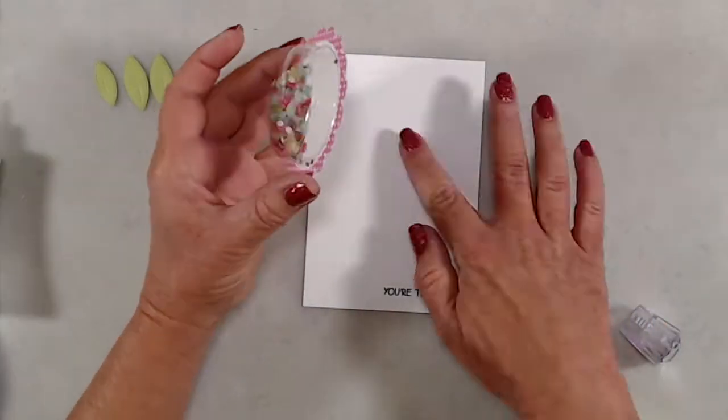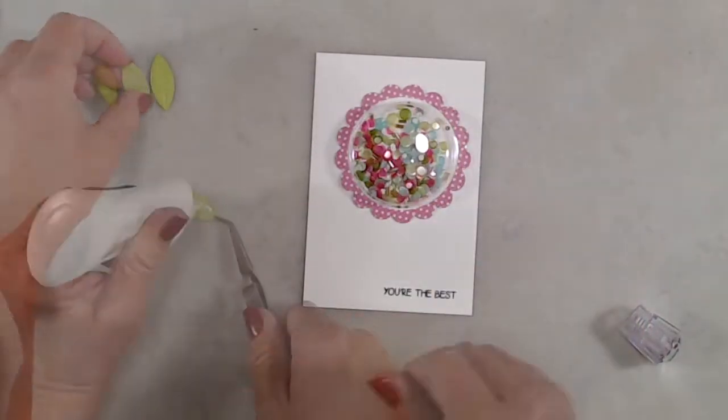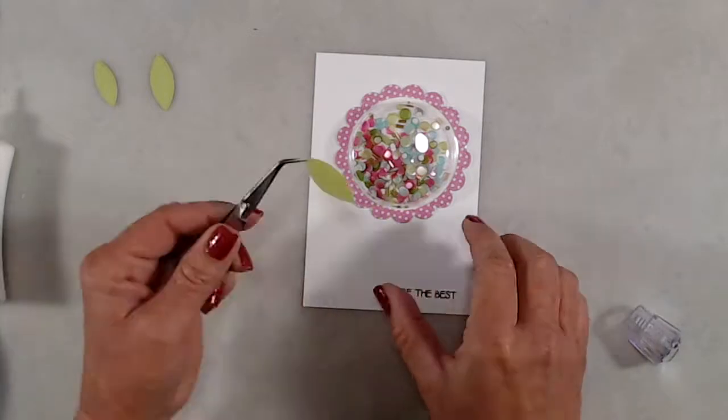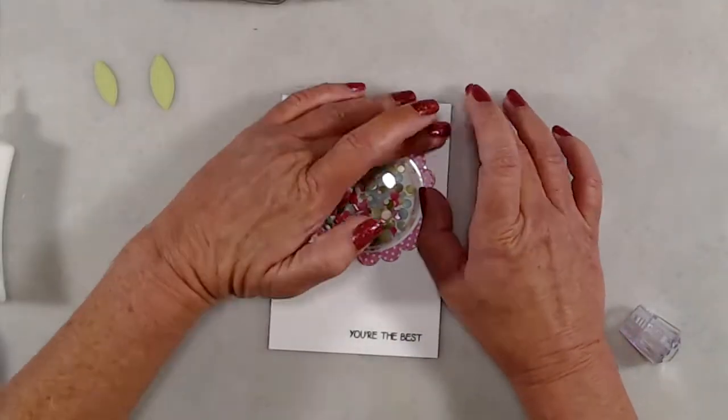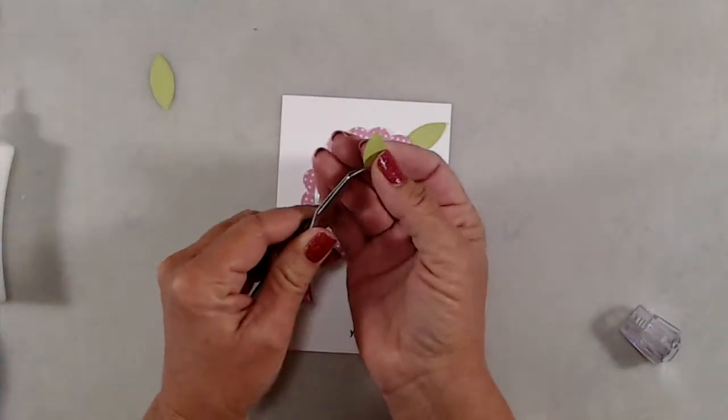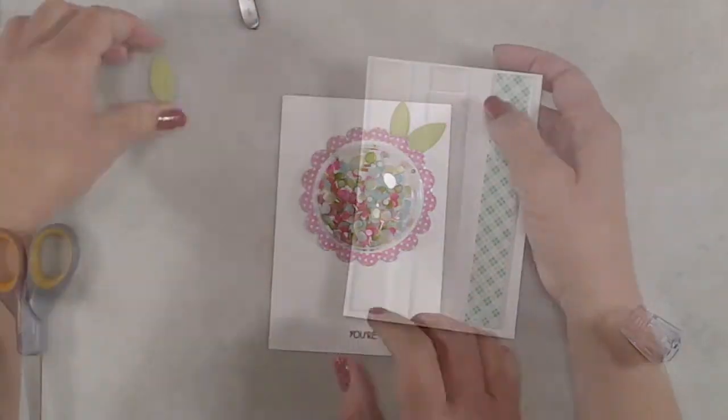I die cut a couple of leaves from the No-See All Seasons Tree die set and used liquid glue to adhere the leaves into place. Once my leaves were in place, I put foam tape on the back side of the panel with the bubble and then adhered that to the front of my card.